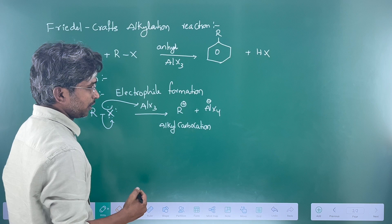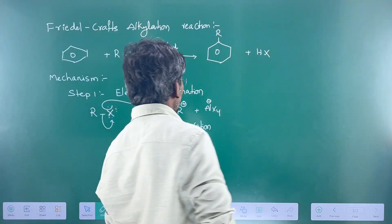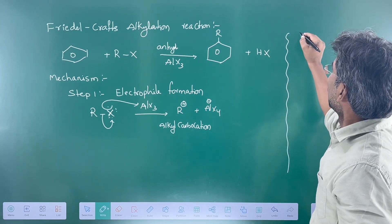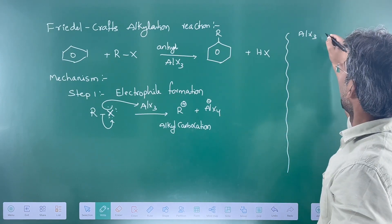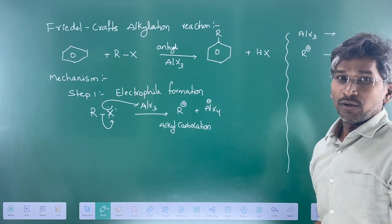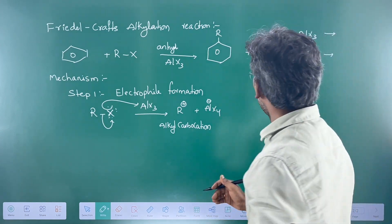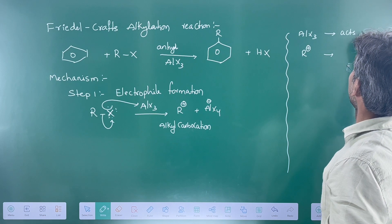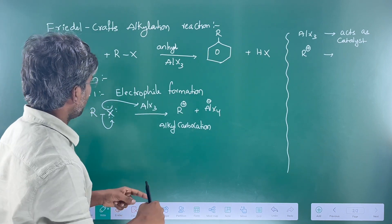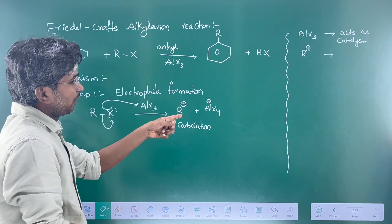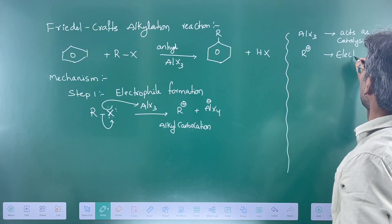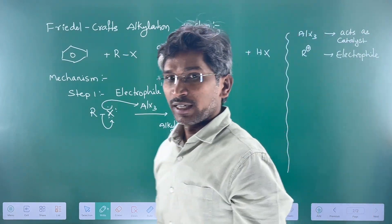In Friedel-Crafts alkylation, some important points: Lewis acid acts as a catalyst. Because of Lewis acid involvement, whenever alkyl halide reacts we get the alkyl carbocation. The alkyl carbocation acts as the electrophile in this reaction. R may be a methyl group, ethyl group, isopropyl group, tert-butyl group, or cyclohexyl group — any organic alkyl group. In the first step, the electrophile R⁺ is generated.